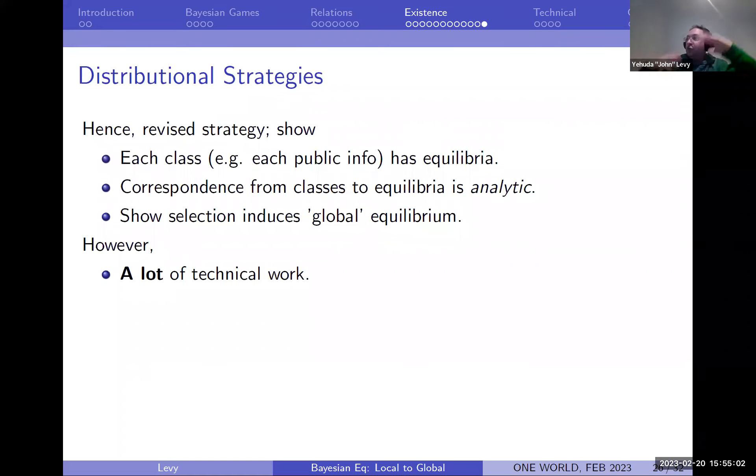What I do: I show that each class — given each piece of public information — has an equilibrium. I show that the correspondence from classes to equilibria, viewing strategies as distributional strategies with the weak topology, has an analytic graph. Then I use an appropriate measurable selection theorem to choose one distributional strategy equilibrium from each class, and I show that when you piece together a distributional strategy in such a way you get a distributional equilibrium on the whole thing, and then translate that back into a behavioral strategy.